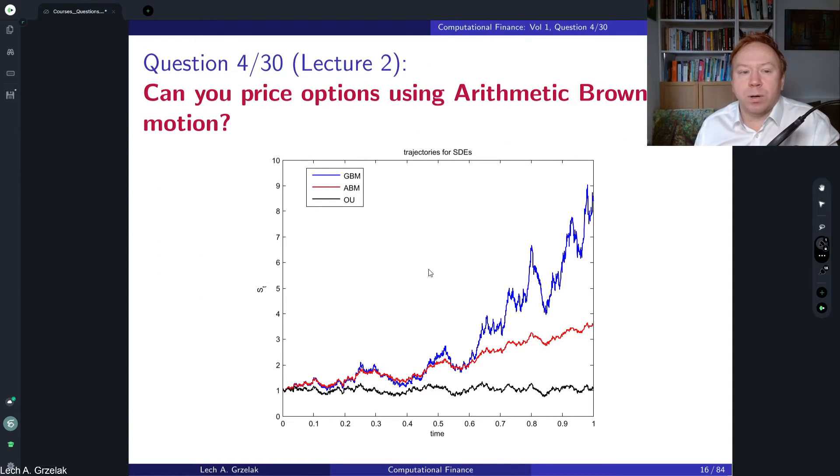Here I have prepared a few realizations, paths for those two or three stochastic differential equations. So we see the blue line, we have geometric Brownian motion, so it is exponentially growing in time. Then we have arithmetic Brownian motion, the red line. You see it's much more linear growth in time.